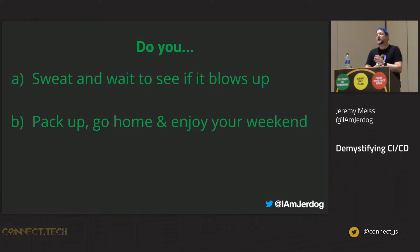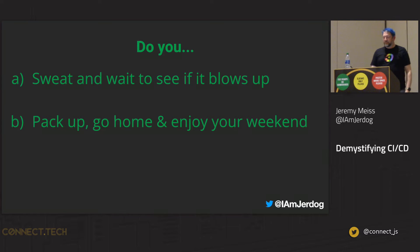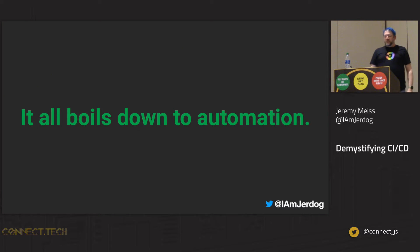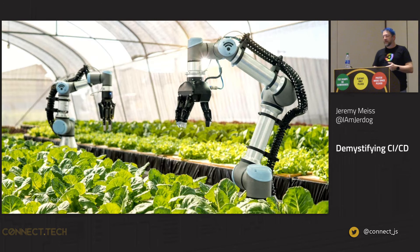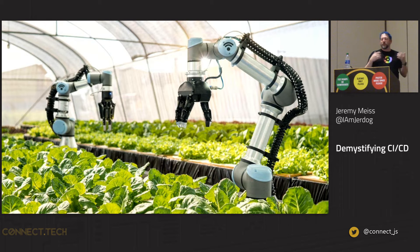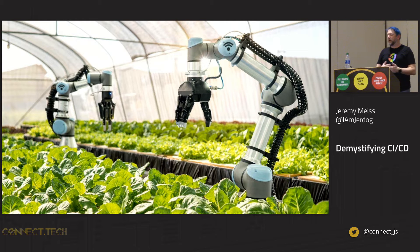But how are you going to know that nothing goes wrong? It all boils down to your automation — from software to processes to manufacturing to, yes, even agriculture.